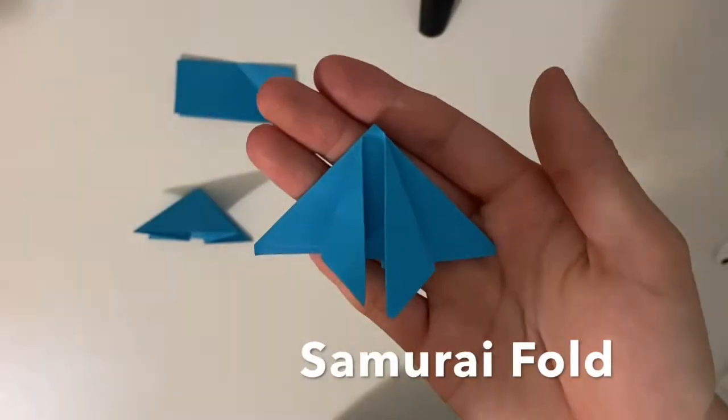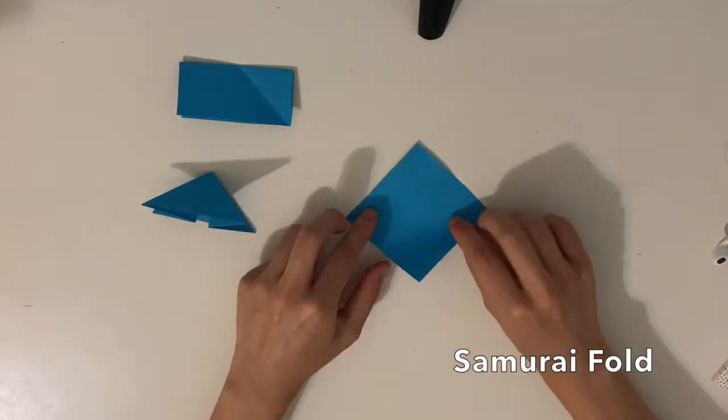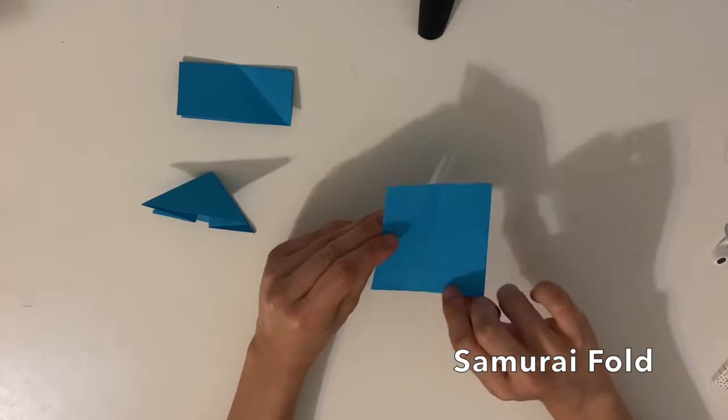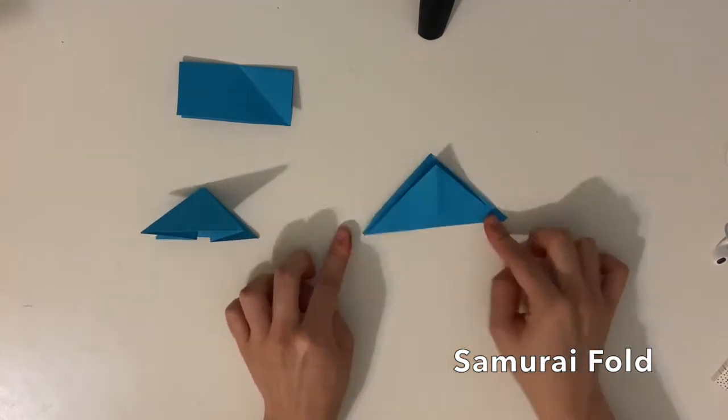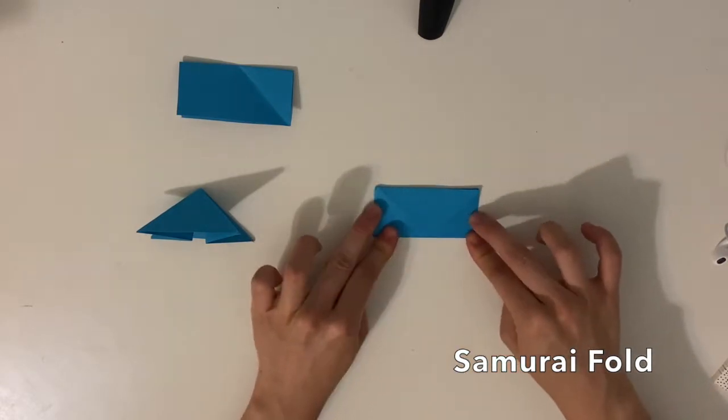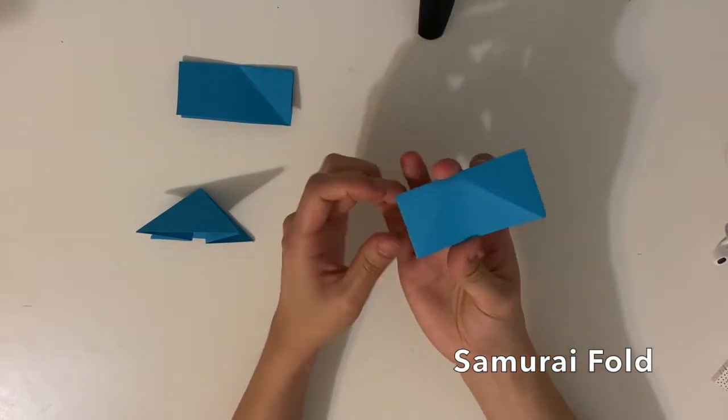Third is our samurai fold. Have the corners meet to make a triangle, and then open it up and do the same thing the other direction. Have the corners meet again. You're left with an X in the middle of your paper, and you'll fold it in half.